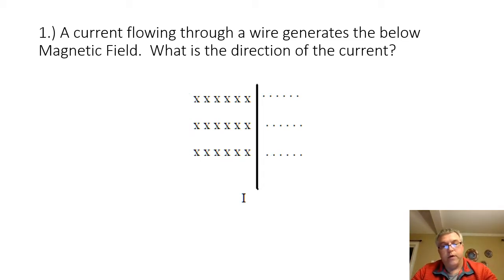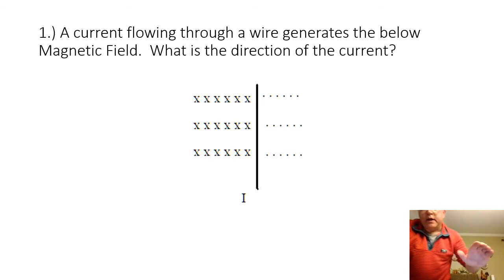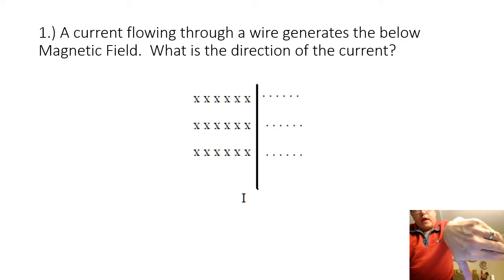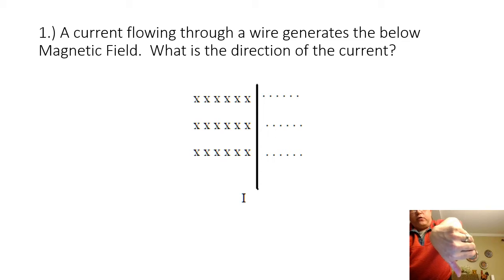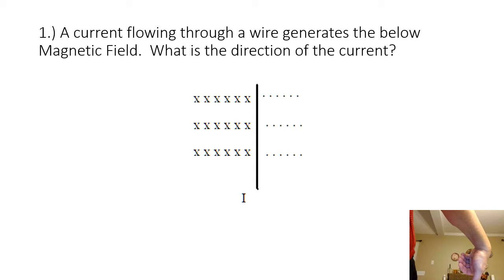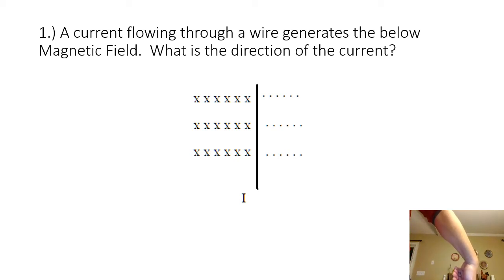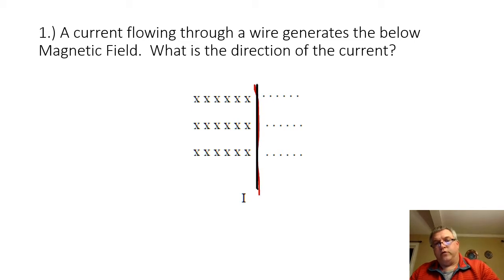Using the first right-hand rule, if we curl our fingers around the wire, our thumb will give us the direction of the current. If we take our fingers and curl them around, on the right-hand side of the wire, my fingers are coming out of the screen toward me. And if I curl around on the left-hand side, I am going in the negative Z direction or into the screen, and my thumb is pointing downward. So the direction for the current is going to be in the downward direction.